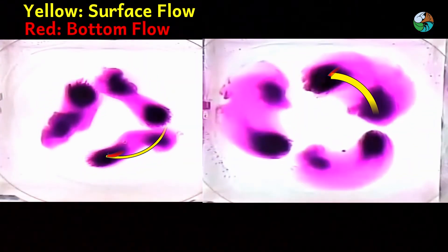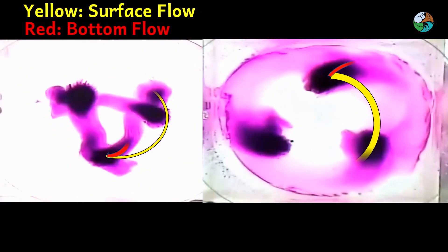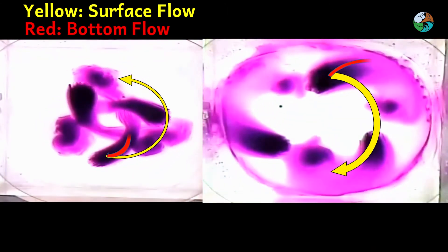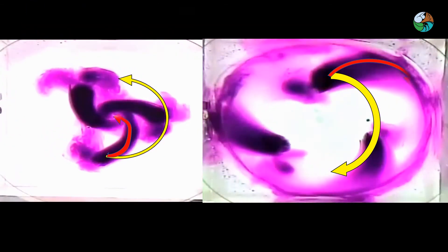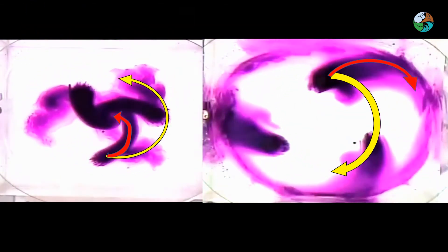By observing from above, we can see that the tracks of the paper dots and the potassium permanganate are different. It means that the flow at the surface and at the bottom were not exactly the same.